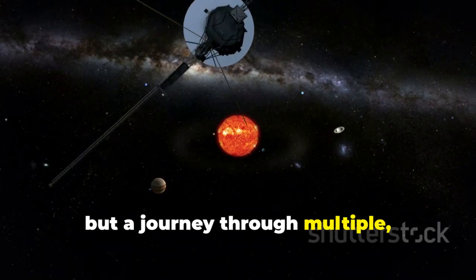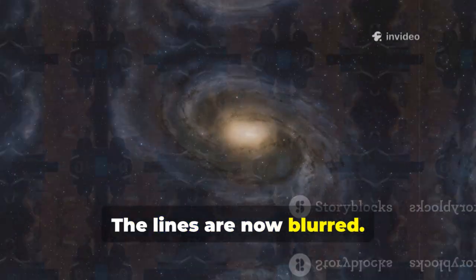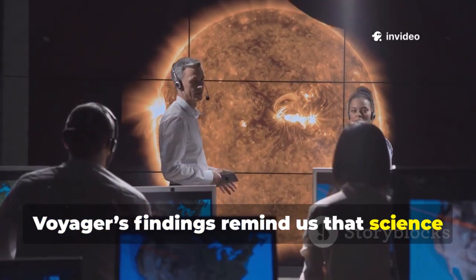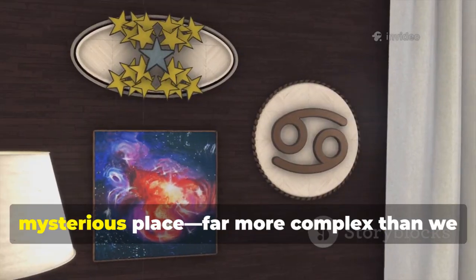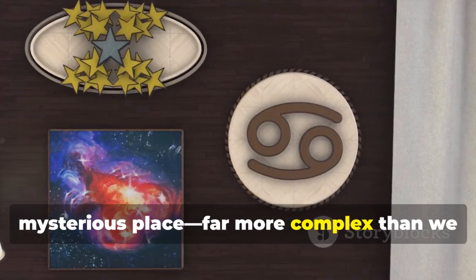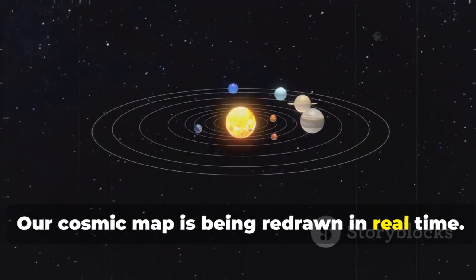The transition to interstellar space is not a single event, but a journey through multiple complex zones. Where does our solar system truly end? The lines are now blurred. Voyager's findings remind us that science is always evolving. The edge of our solar system is an active, mysterious place, far more complex than we ever imagined. Our cosmic map is being redrawn in real time.